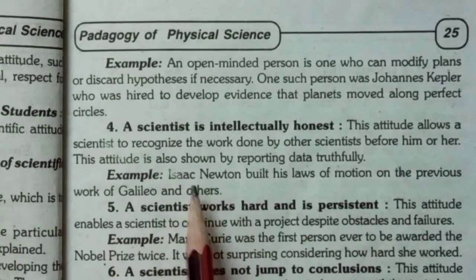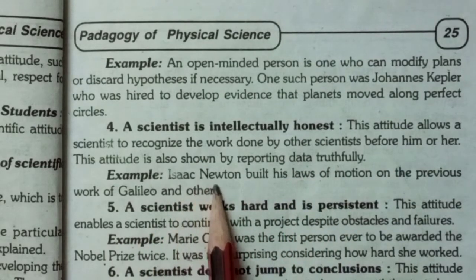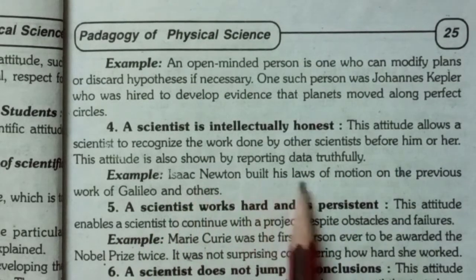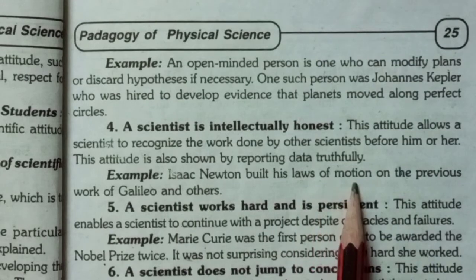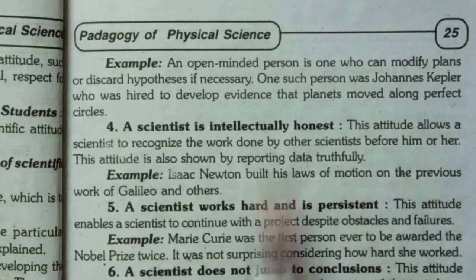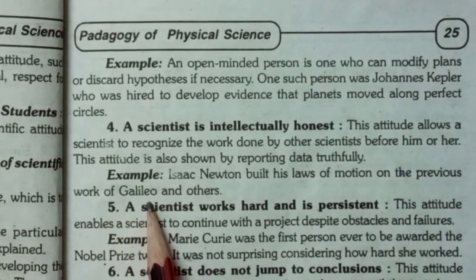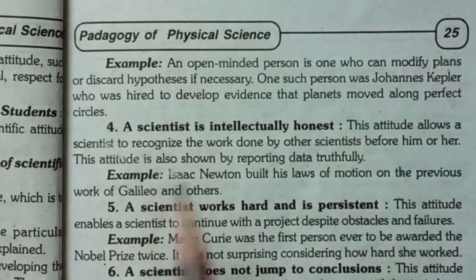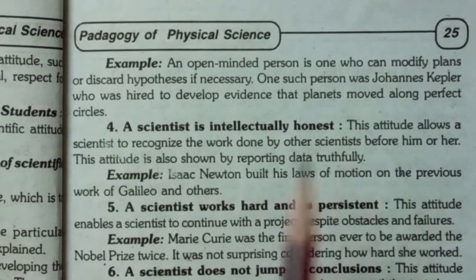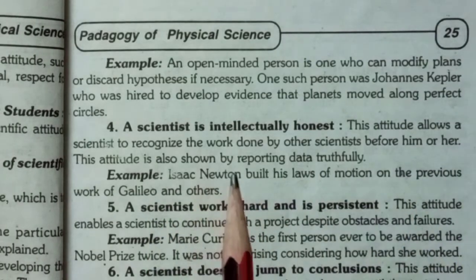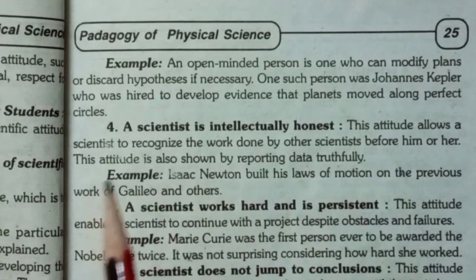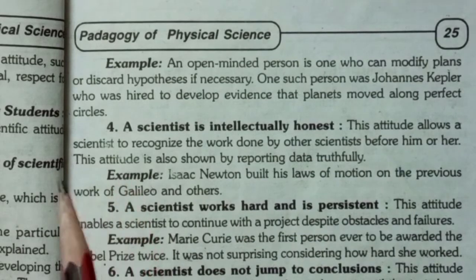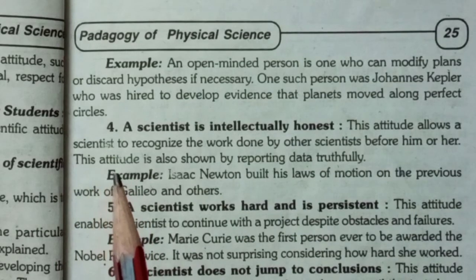For example, Isaac Newton built his laws of motion on the previous work of Galileo and others. A scientist needs to be very honest and must recognize the work done by other scientists previously before building upon it.